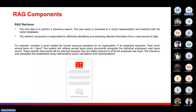The RAG retriever component works by converting the user query into a vectorized format and then performing a similarity search on the vector database. For example, if you want information related to RAG, the query 'RAG' is converted into vector embeddings and those are searched against the vector database to retrieve relevant information from the foundational data source stored there.